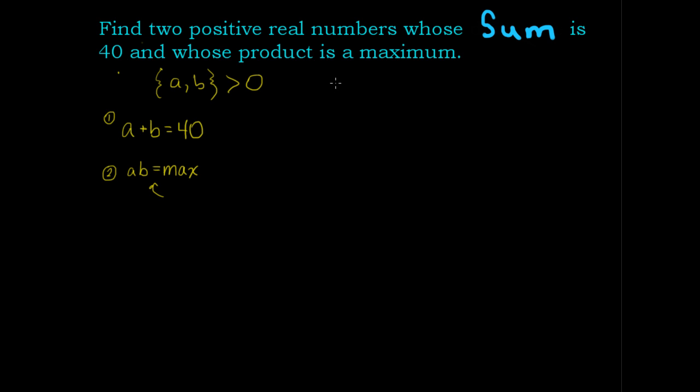To solve this, let's solve for a in the first equation. a plus b equals 40, so a is equal to 40 minus b. We can use this value to substitute, so we have a times b, and when we substitute we have (40 minus b) times b. We'll call this a function of b.